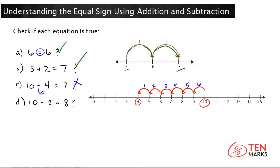Let's try the last one. 10 minus 2 equals 8. Use the number line. Start at 10 and count back by 1's two times. Do you land on 8? So, here's 10 and hop back by 1's two times and you land on 8. This equation is true.